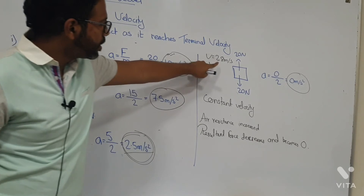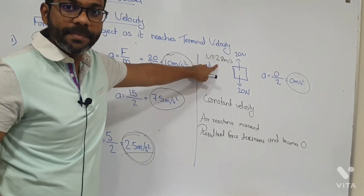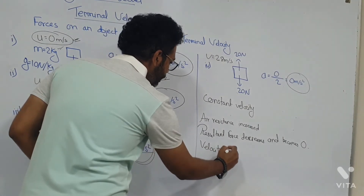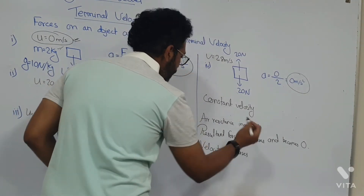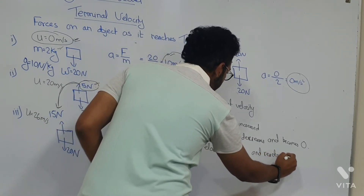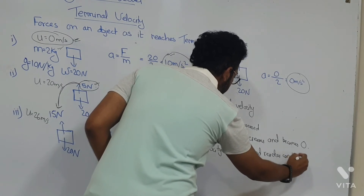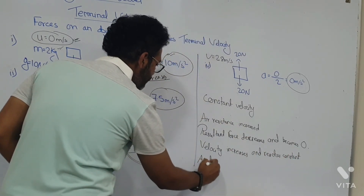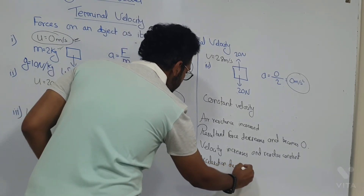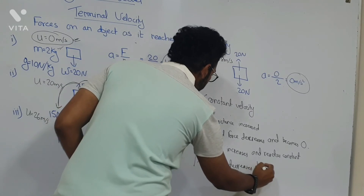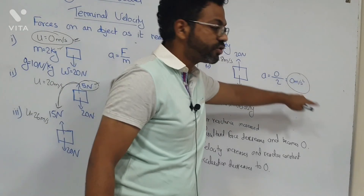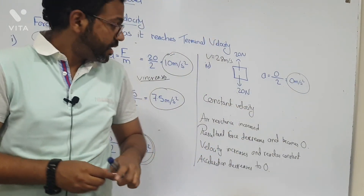And what happened to the velocity of the object? The velocity of the object kept on increasing until it reached the maximum value — so velocity increases and reaches a constant value. And the acceleration decreases to zero — it started from 10, then 7.5, then 2.5, and eventually reached zero.